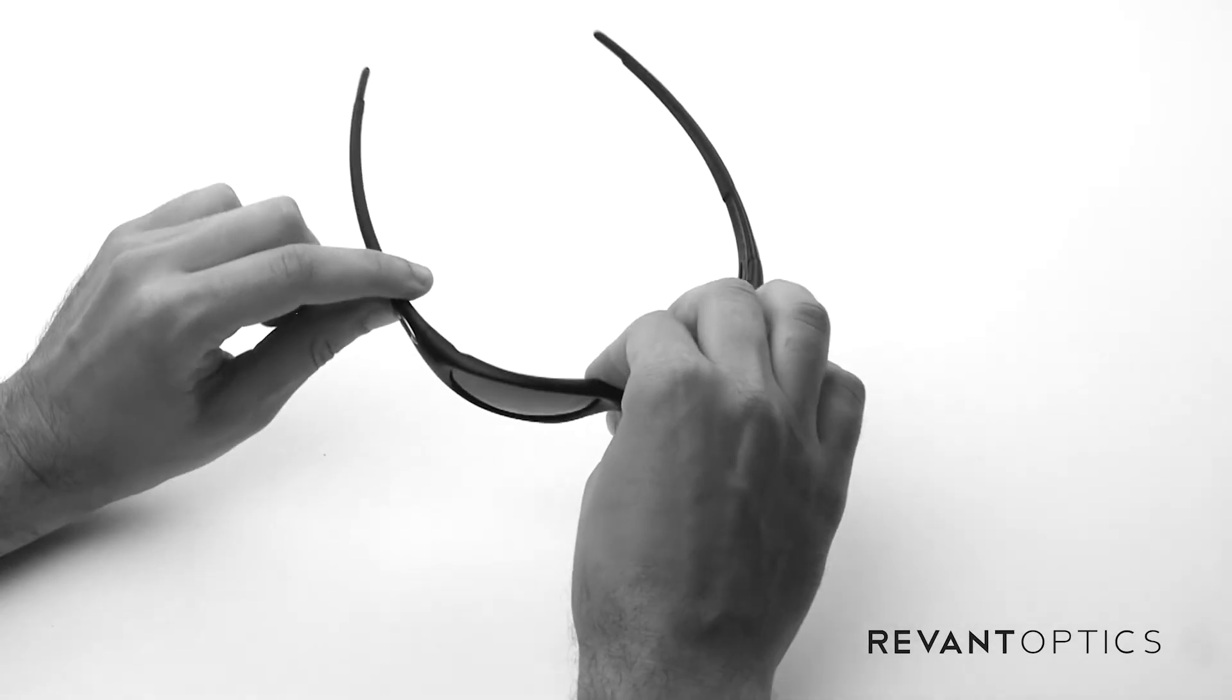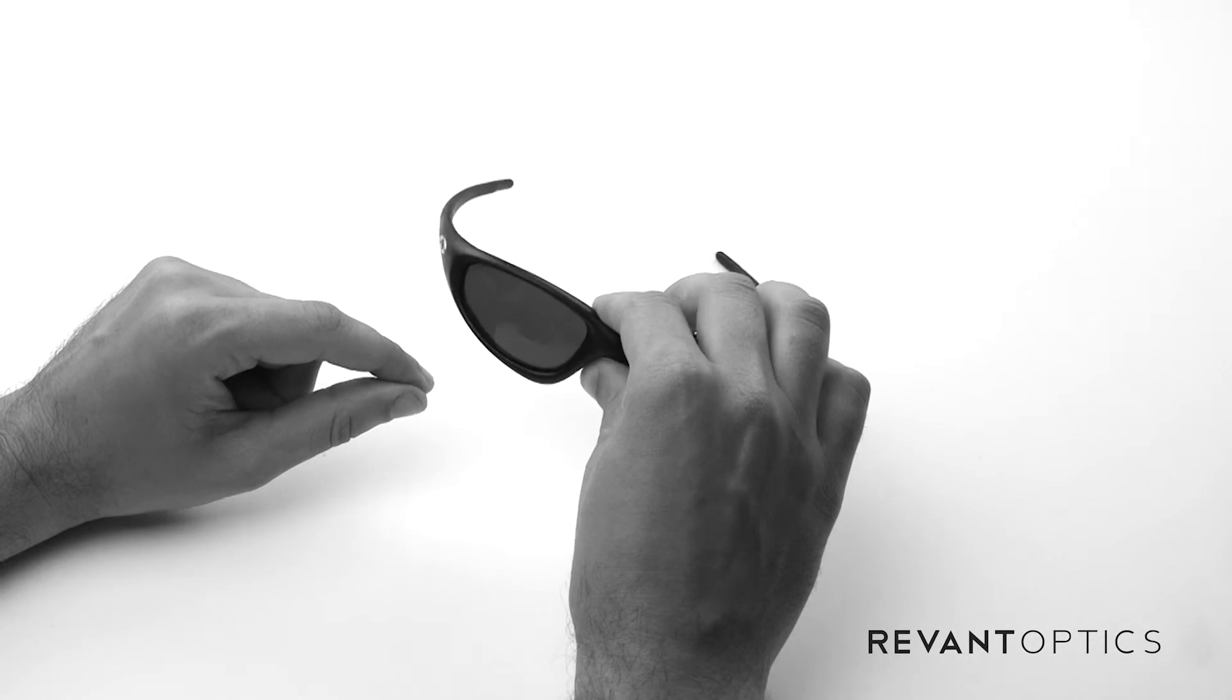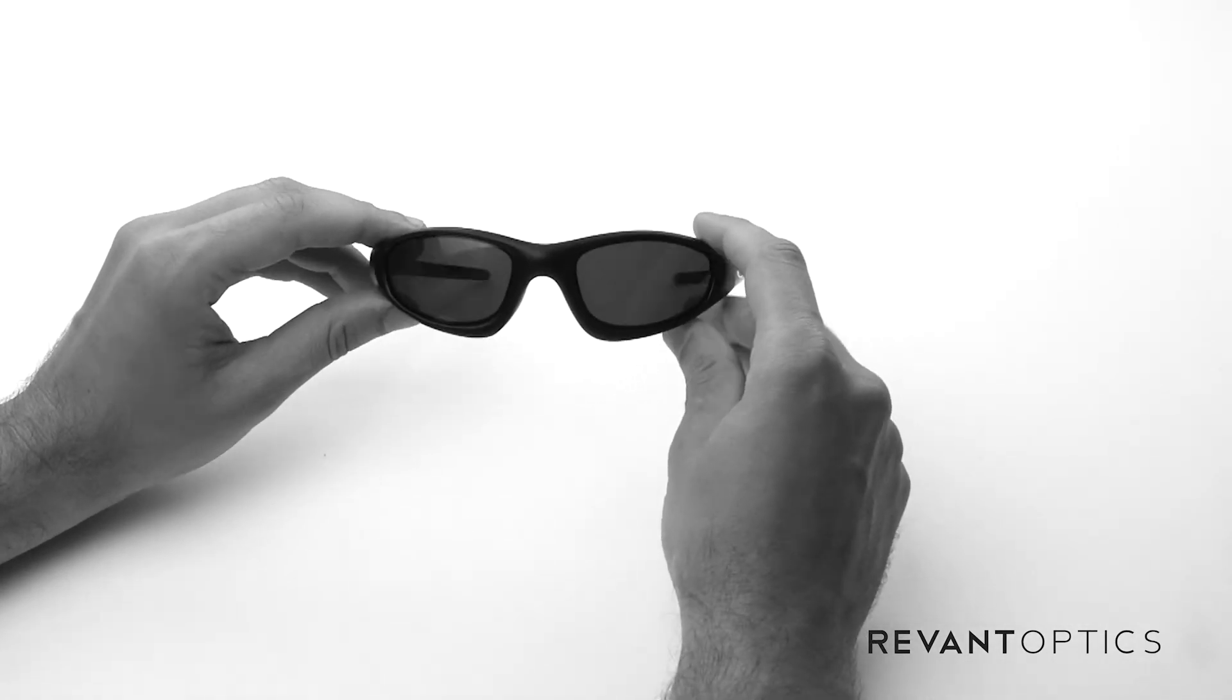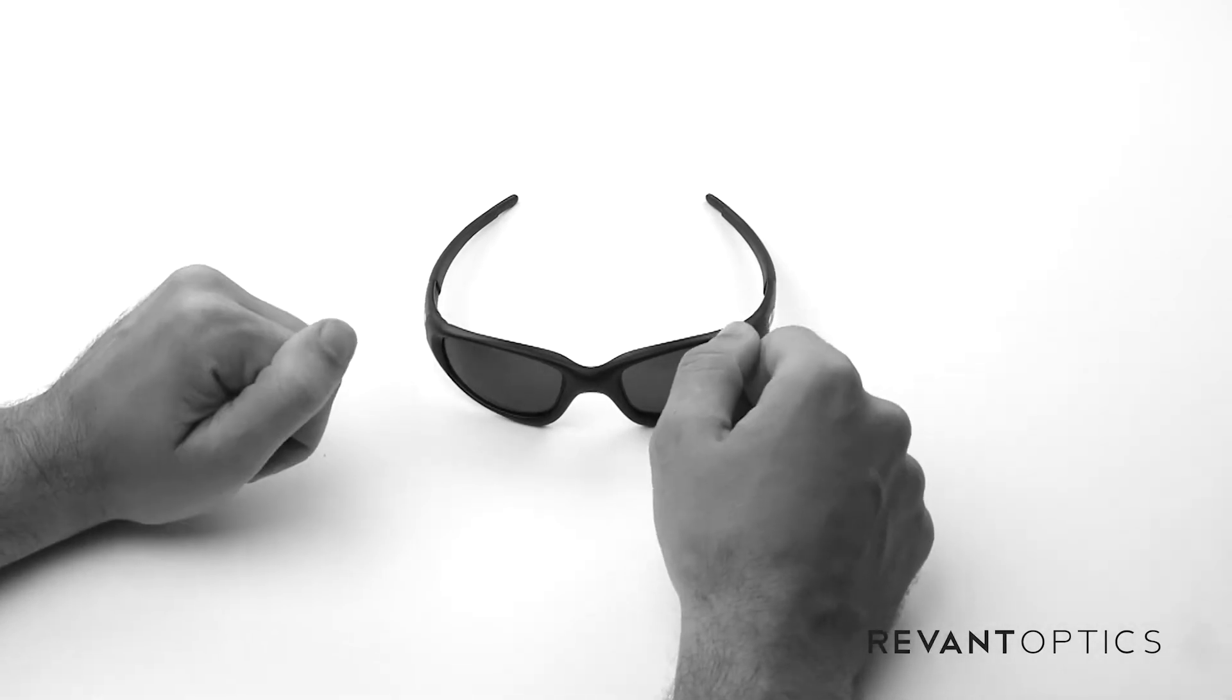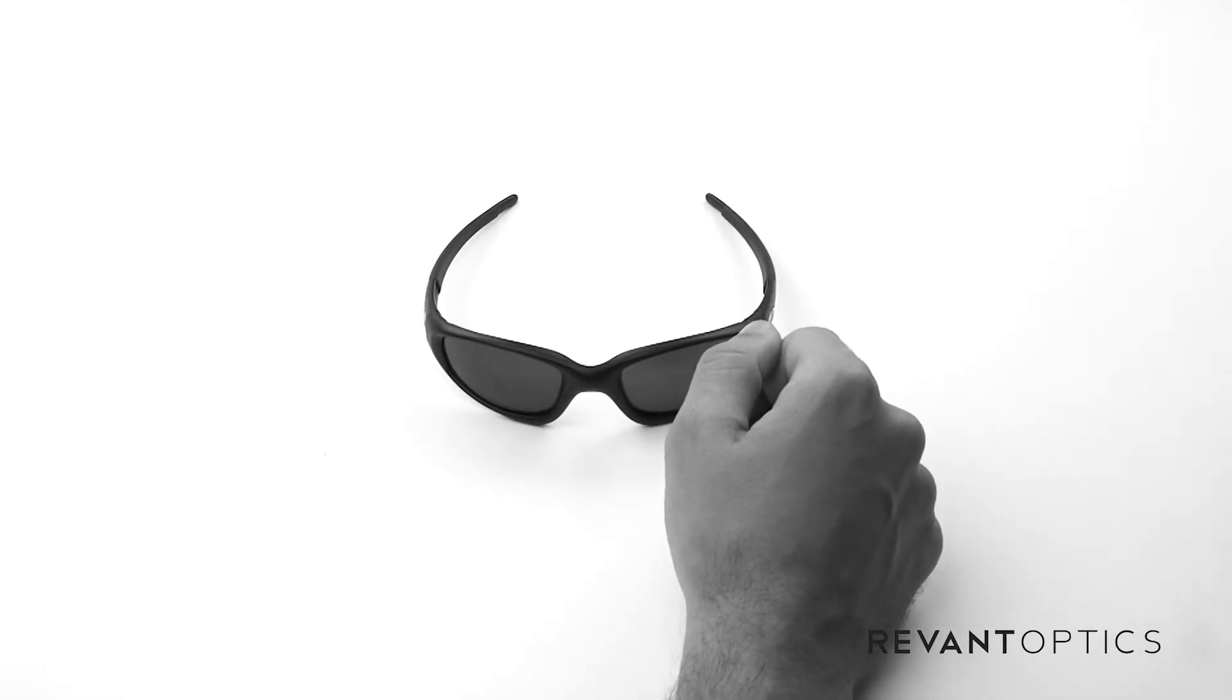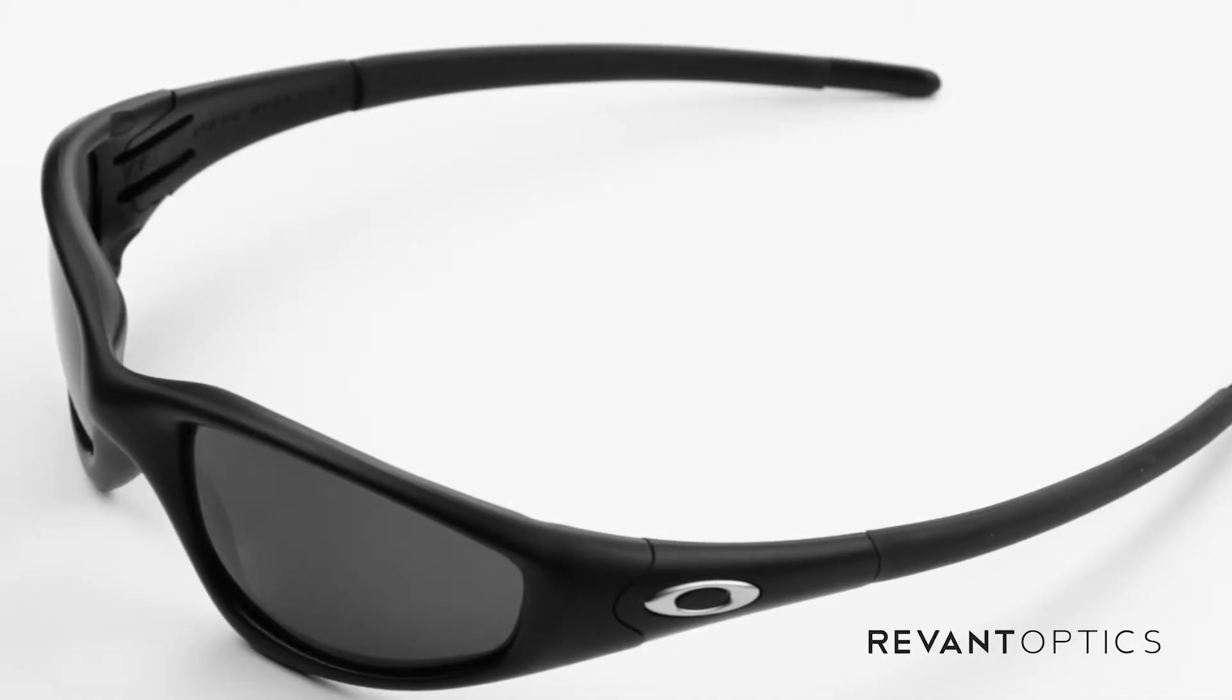So if you need new lenses, check them out at RevantOptics.com. We have many different mirror coating colors to customize your look or customize your lens tint for different activities. Once you add new lenses to your frame, we'd love to see how they look and how you brought new life to your old frames or favorite frames. Post them to Facebook, Instagram, Twitter, and hashtag RevantOptics.